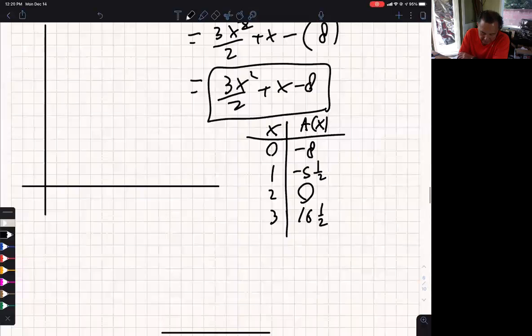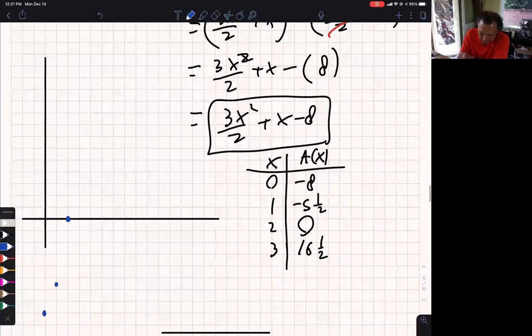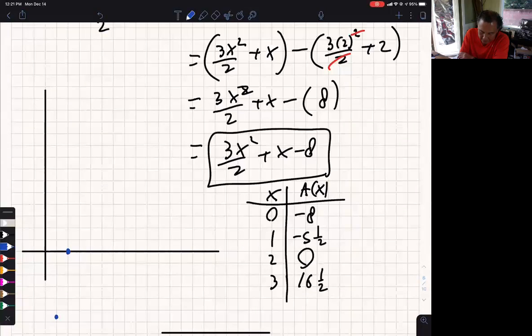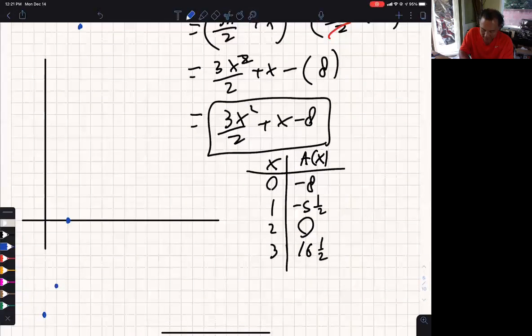Let me graph those points. 0, negative 8. Then 1, negative 5½. Then 2, 0. Then 3, 16½. Wow, that's way up there. That's crazy. Can I graph that?